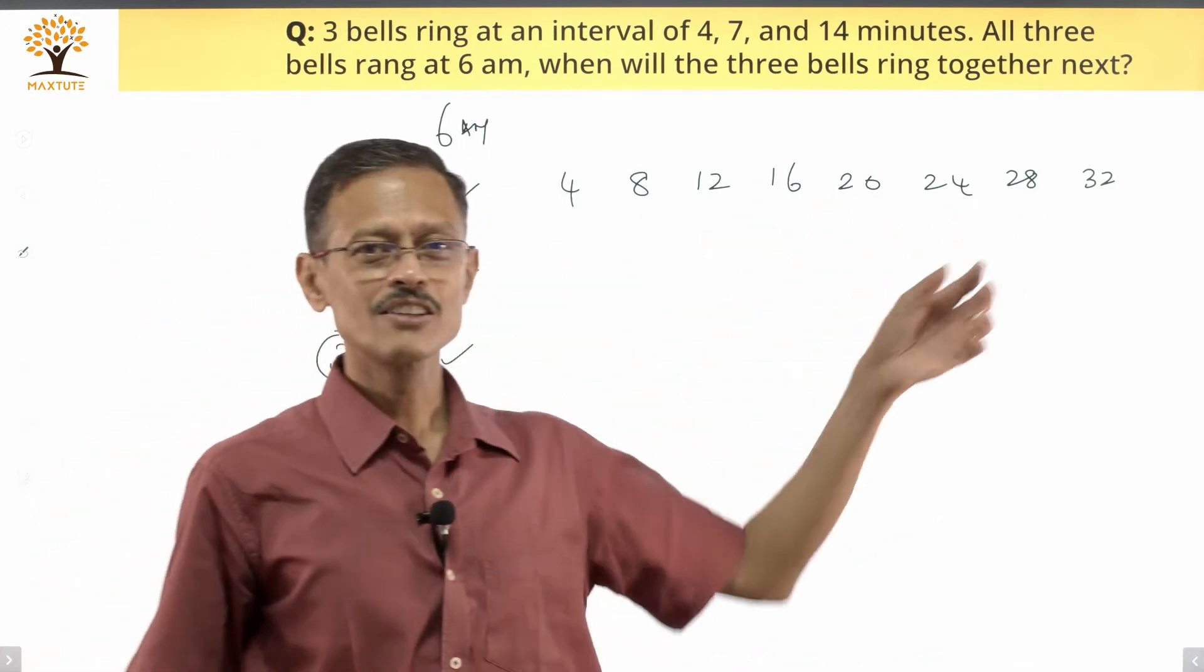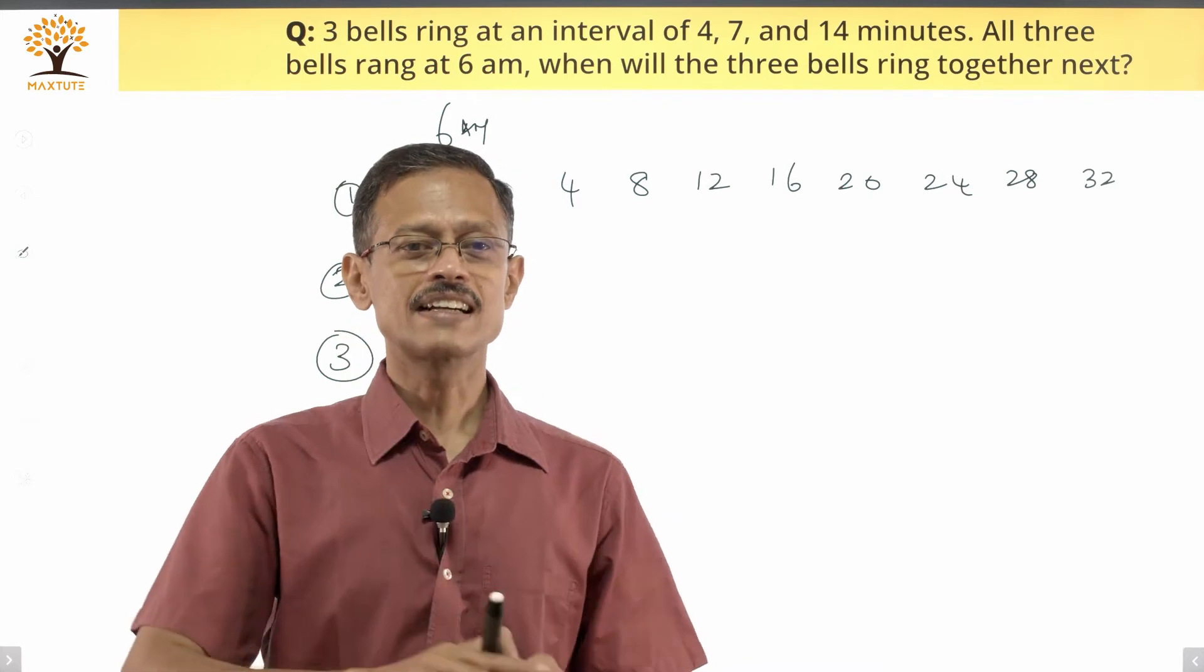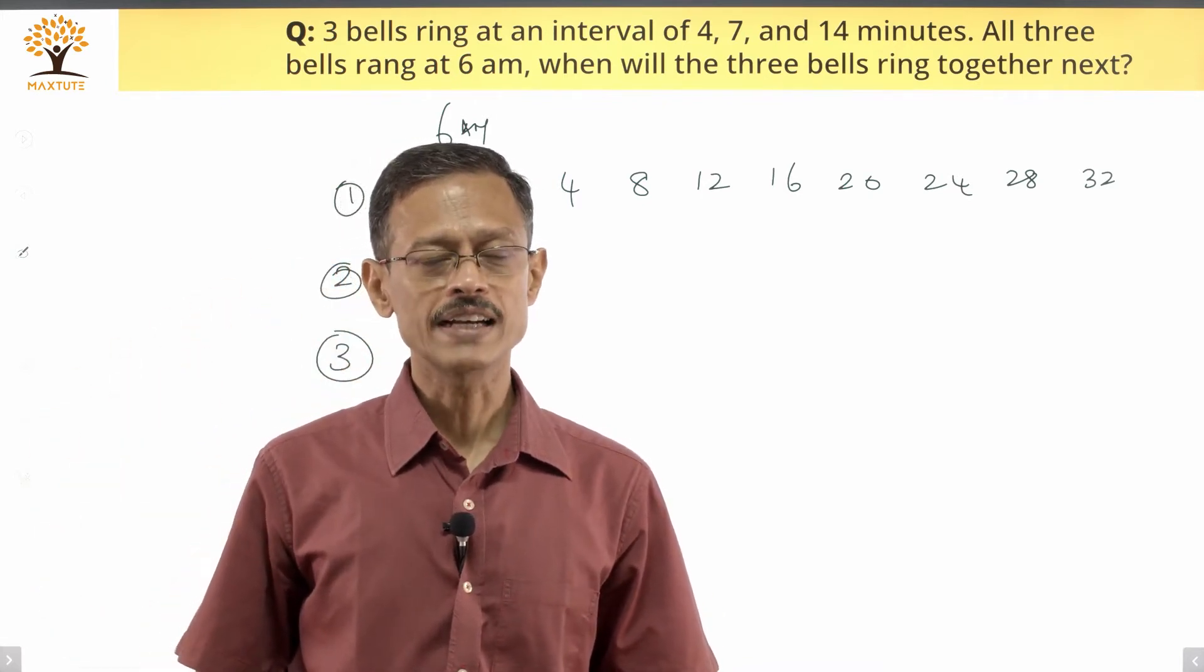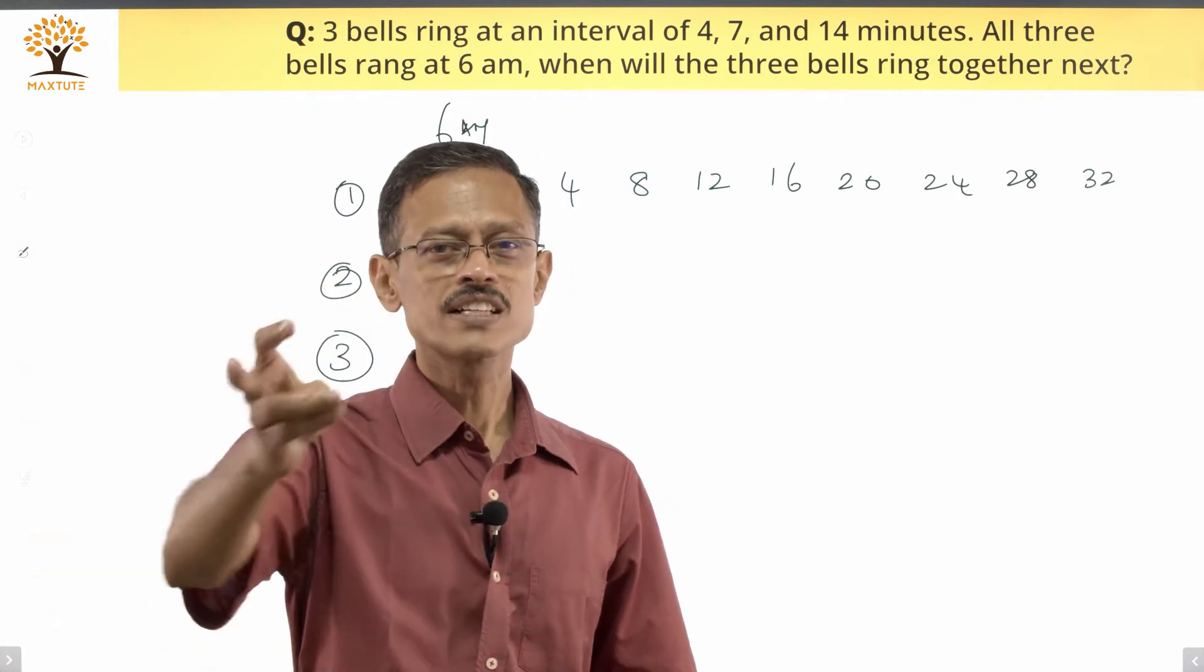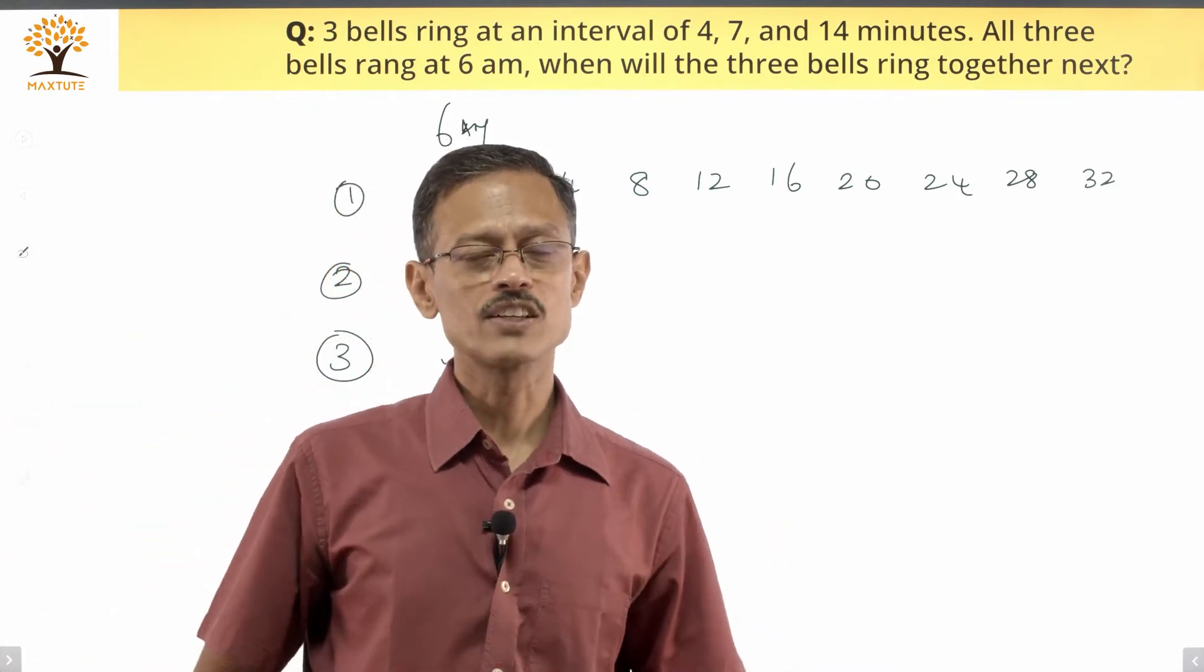So quickly realize the first bell is going to ring at values, minutes at time intervals which are multiples of four from 6 a.m. So 6:04, 6:08, 6:12, that is 4 minutes, 8 minutes, 12 minutes from 6 a.m. is when they're going to be ringing.